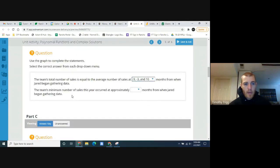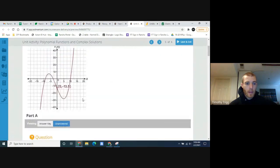The team's minimum number of sales this year occurred at approximately blank months from when Jared began gathering data. So when was the minimum difference in sales? Well, that was the lowest value, this valley right here, the bottom of this curve, which happened at 5 months.